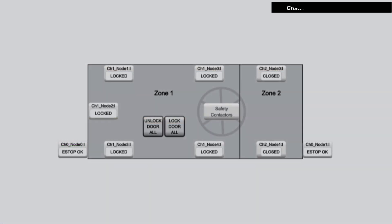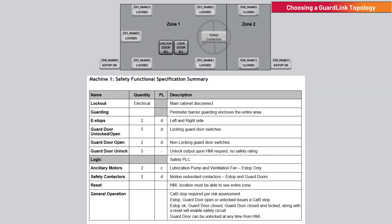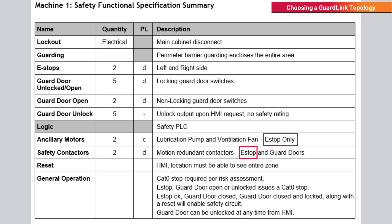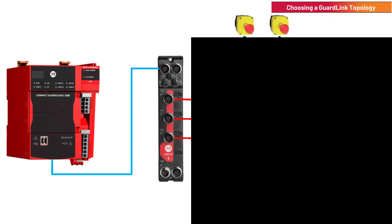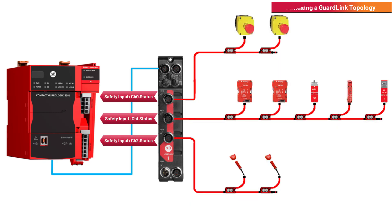Some safety system designs require reacting differently to different types of inputs. For example, if all power is required to be shut down on an emergency stop, but only motion power is required to be shut down during a guard door open, then e-stops would need to be on a GuardLink channel separate from guard doors. The example program separates e-stops, locking guard doors, and non-locking guard doors.